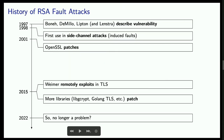This is not a new attack. It was described back in 1997 by Boneh, DeMillo, Lipton, and Lenstra, and almost immediately began to be used in a long string of side-channel work using induced faults and attacker-controlled hardware to recover RSA keys. Then in 2015, Weimer extended this work by showing it could be exploited completely remotely — making lots of TLS connections to servers and waiting for them to make natural faults, then recovering faulty signatures and private keys.